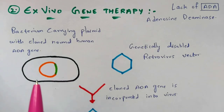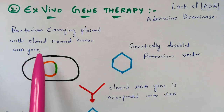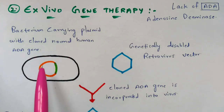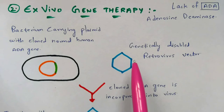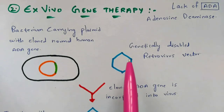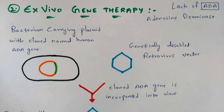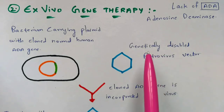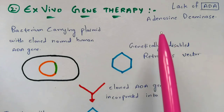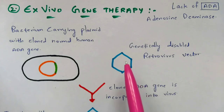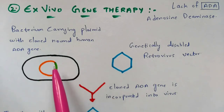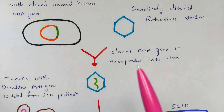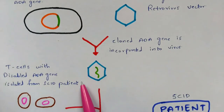For ex vivo gene therapy, we first select a bacterium carrying a plasmid with the cloned normal human ADA gene — shown here in green. We then select a genetically disabled retrovirus vector. Unlike cystic fibrosis where we used an adenovirus vector, here we use a retrovirus vector — different genetic disorders use different vectors. The ADA gene is then cloned and incorporated into this retrovirus vector.